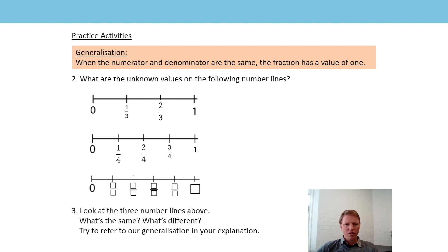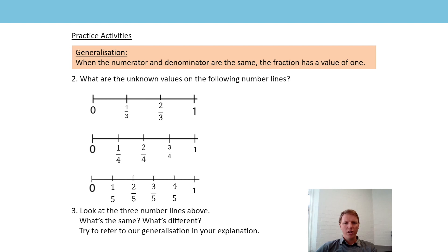Final number line - we're not told much information here. Let's think about how many equal parts it's been split into. I can count: 1 equal part, 2 equal parts, 3 equal parts, 4 equal parts, 5 equal parts up until that line - so if it's been split into five equal parts, they must be fifths. Each time we're adding on another fifth, so let's count in fifths together: 0, 1 fifth, 2 fifths, 3 fifths, 4 fifths - we could write 5 fifths, but from our generalisation we know we can also write 1.